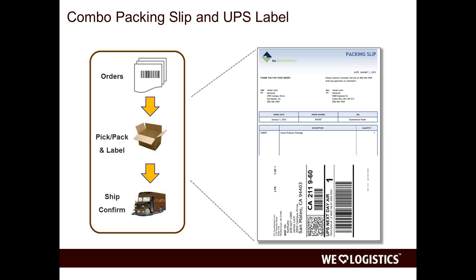Another use case includes both an outbound label and a return label — the outbound label is applied at pack time, and the return label is folded inside the package to facilitate customer returns. A third scenario uses a QR code linking to your website to generate the return label on the fly, driving customers back to your site where they might do an exchange or buy additional items instead of simply returning.